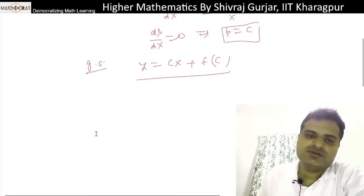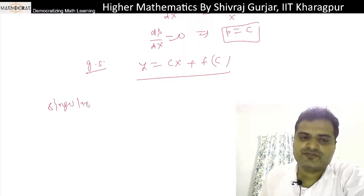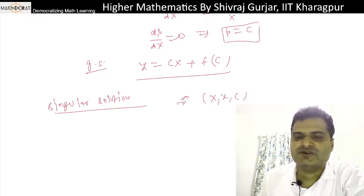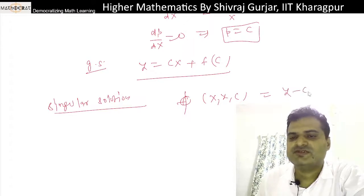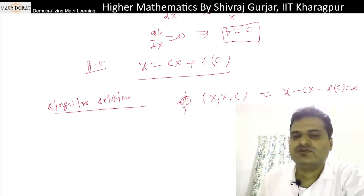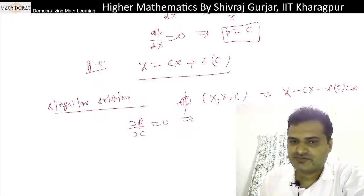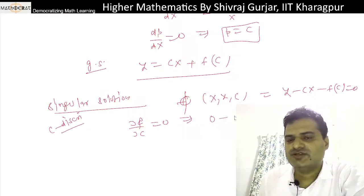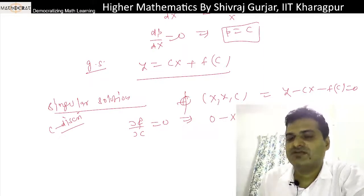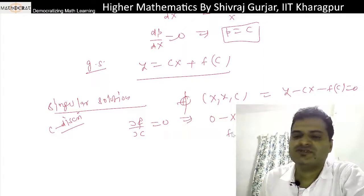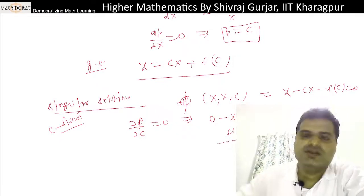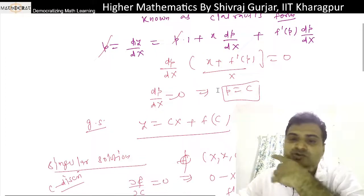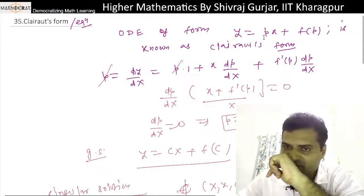Now for singular solution, let φ(x,y,c) be a function. We have y - cx - f(c) = 0. So ∂φ/∂c = 0. Differentiating to get the discriminant: f'(c) + x = 0.